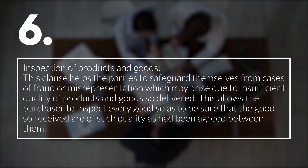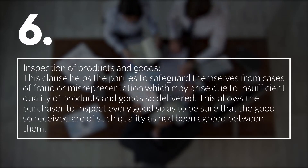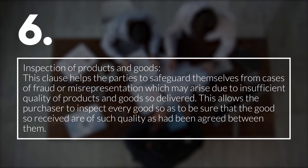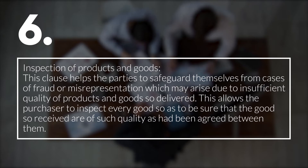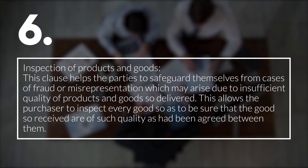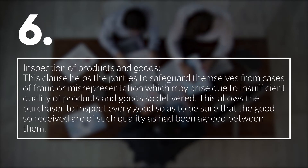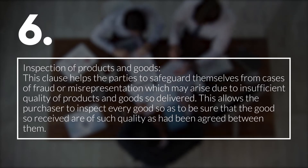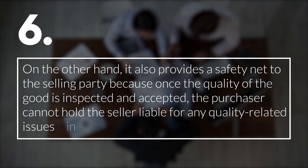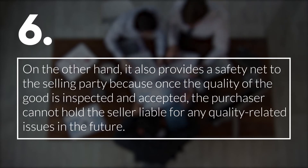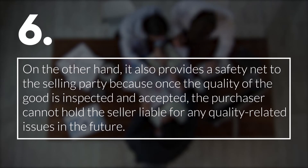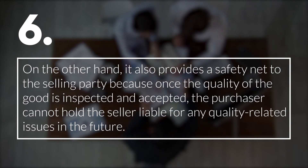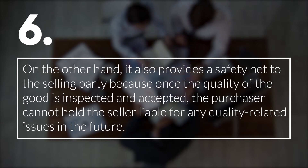6. Inspection of Products and Goods. This clause helps the parties to safeguard themselves from cases of fraud or misrepresentation which may arise due to insufficient quality of products and goods so delivered. This allows the purchaser to inspect every good so as to be sure that the goods received are of such quality as has been agreed between them. On the other hand, it also provides a safety net to the selling party because once the quality of the goods is inspected and accepted, the purchaser cannot hold the seller liable for any quality-related issues in the future.